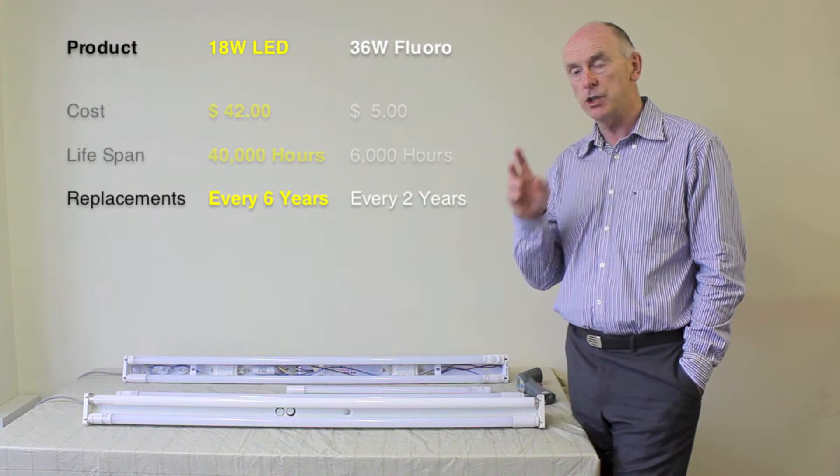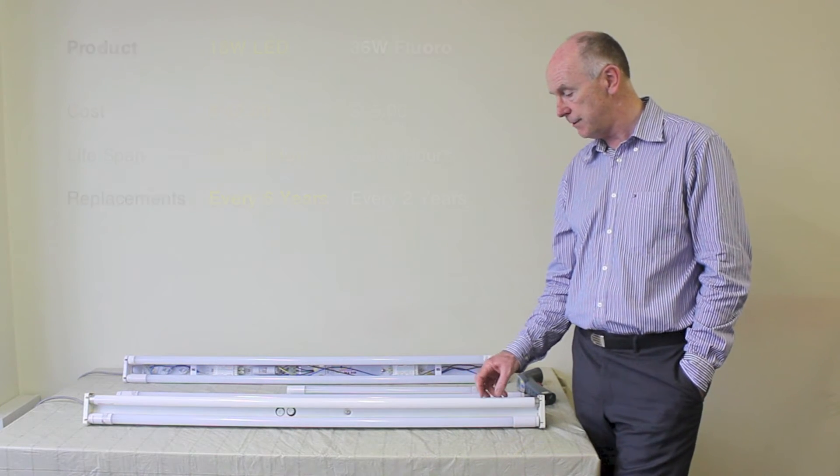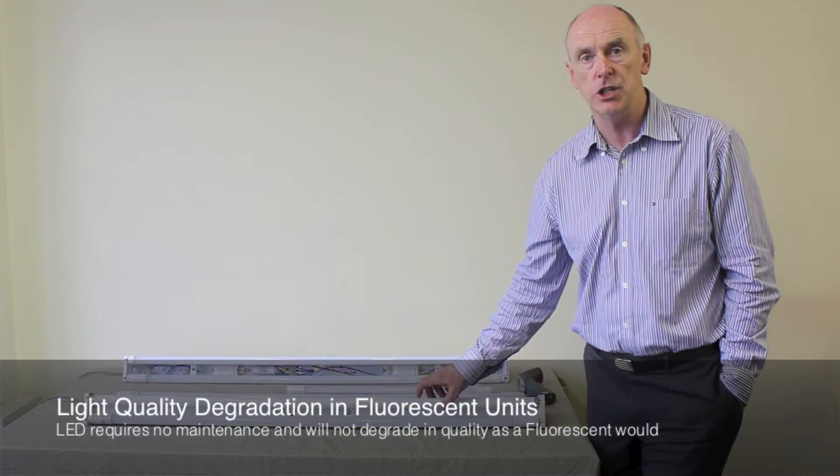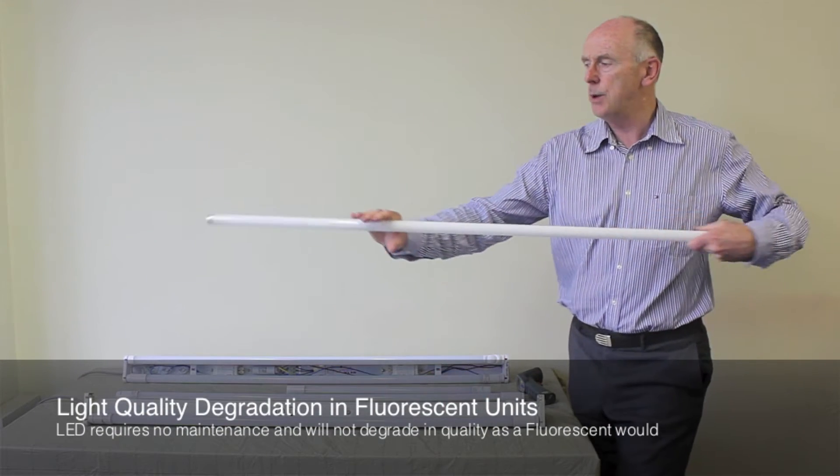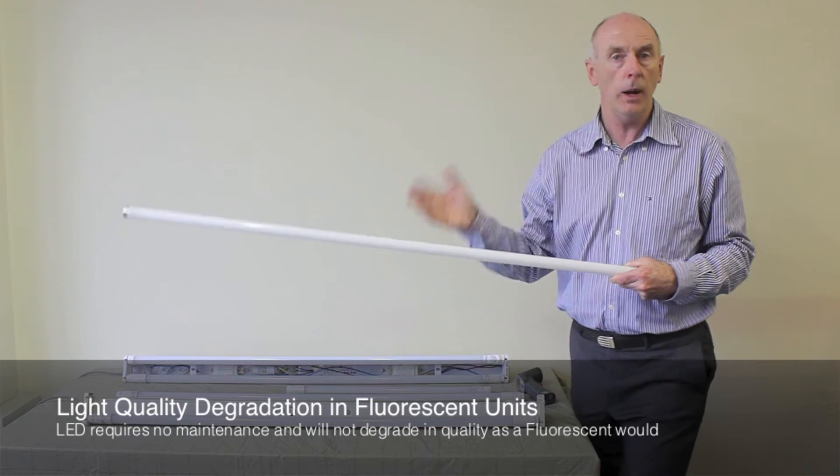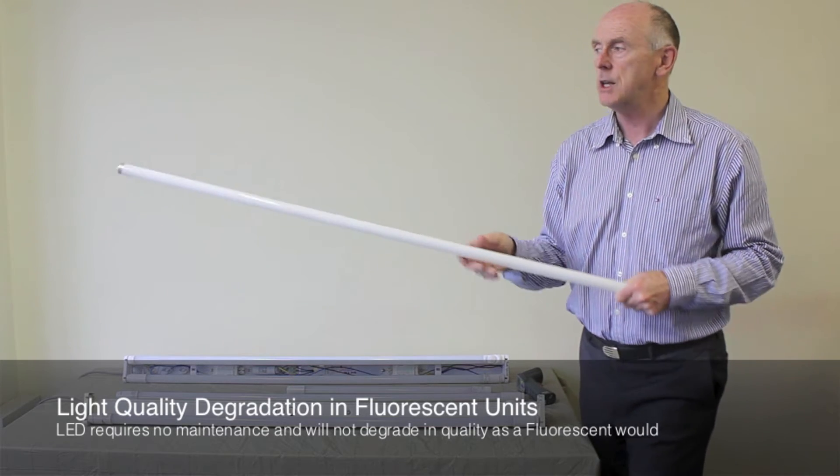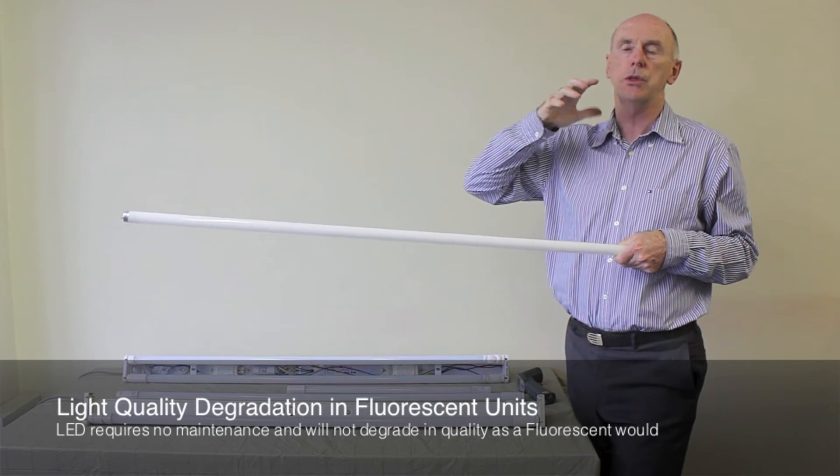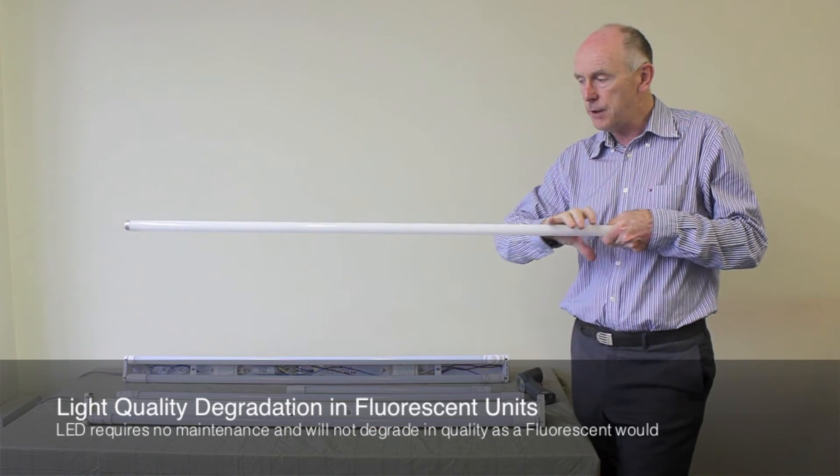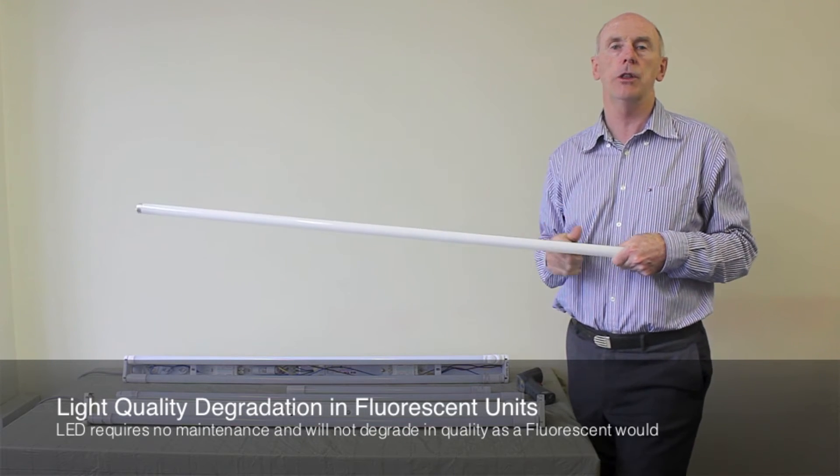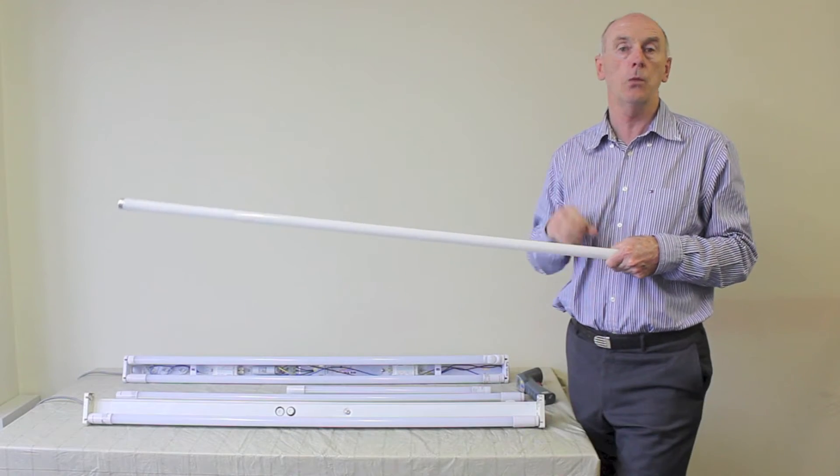The other thing which is very interesting about a fluorescent tube is a fluorescent tube is an electrostatic discharge device. Now what does that mean? One end of this will be full of dust, and no one cleans the fluorescent tube. So in conjunction with the degradation of the life of the normal fluorescent tube, you'll also have the reduction in light output due to the fact that the top end of the fluorescent light will be covered with dust.